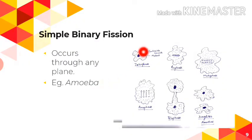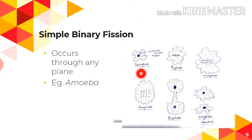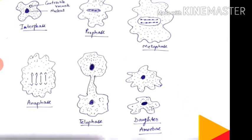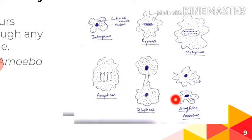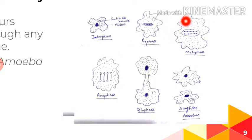Simple binary fission in Amoeba: the structure of Amoeba consists of a contractile vacuole and a nucleus, and the plane of division can pass through any plane. First, the nucleus and DNA get replicated, then cell division starts — going through prophase, metaphase, anaphase, and telophase — until two daughter Amoeba are formed. The plane of division can pass through any plane.